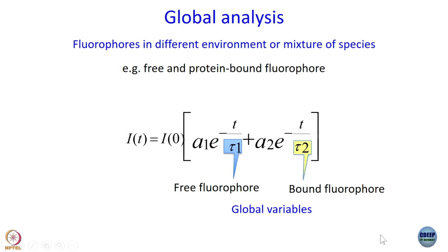What about the amplitudes — will they be the same? When you have no protein, there should be no tau 2 component; it should be a single exponential with A1 equal to 1 and A2 equal to 0. When all fluorophores are bound, A2 should be 1 and A1 should be 0. In any intermediate situation, A1 will be between 1 and 0, and A2 between 0 and 1. As you increase protein concentration, A1 goes from 1 to 0, and A2 goes from 0 to 1.